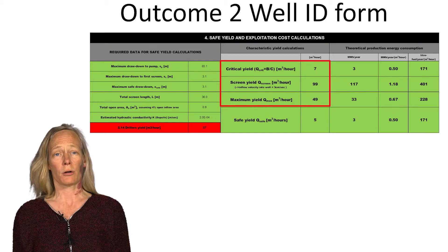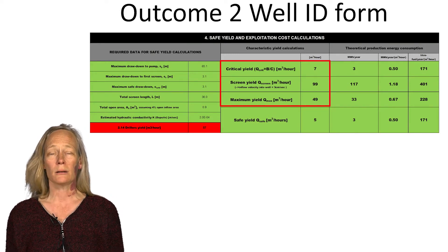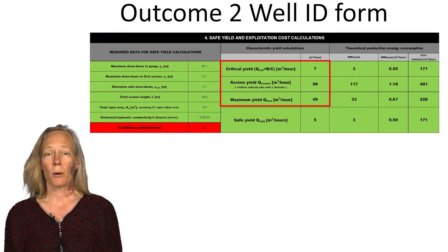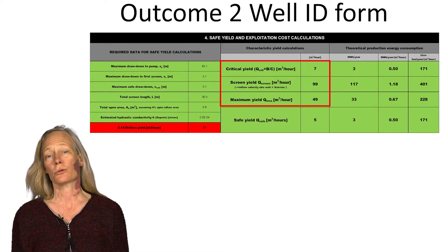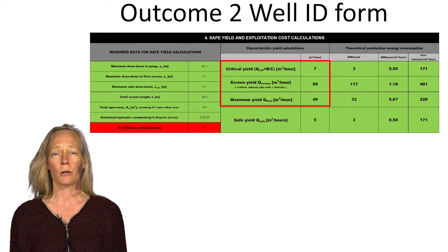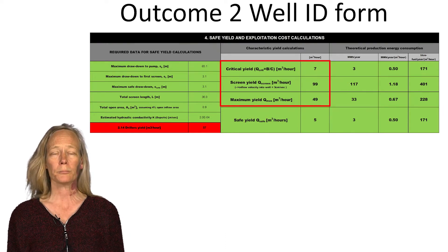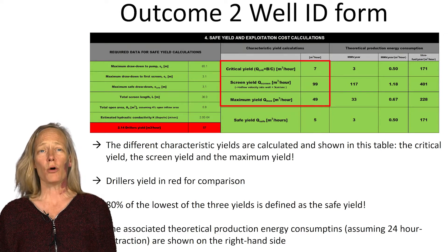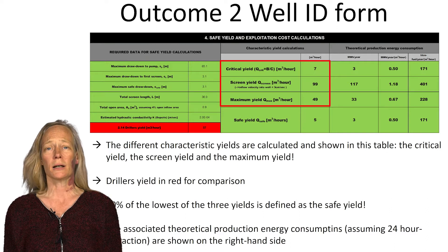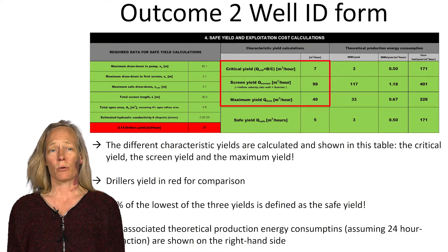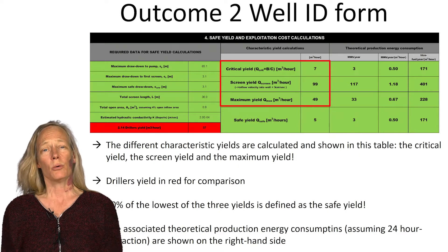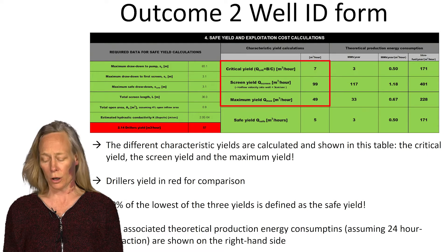The third characteristic yield is the maximum yield, constrained by the maximum safe drawdown defined by the position of the pump and the position of the uppermost screen. The drawdown induced by pumping must never go below these limits. To obtain the safe yield, we take the lowest of the three characteristic yields and multiply it by 0.8 — meaning the safe yield is 80% of the lowest characteristic yield — ensuring all criteria above are satisfied.